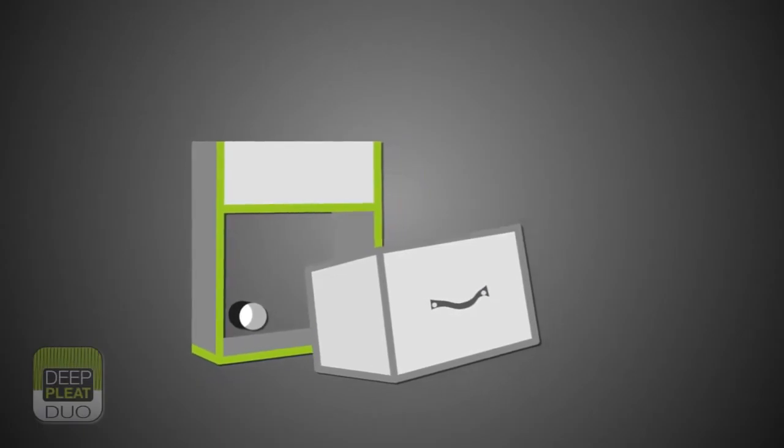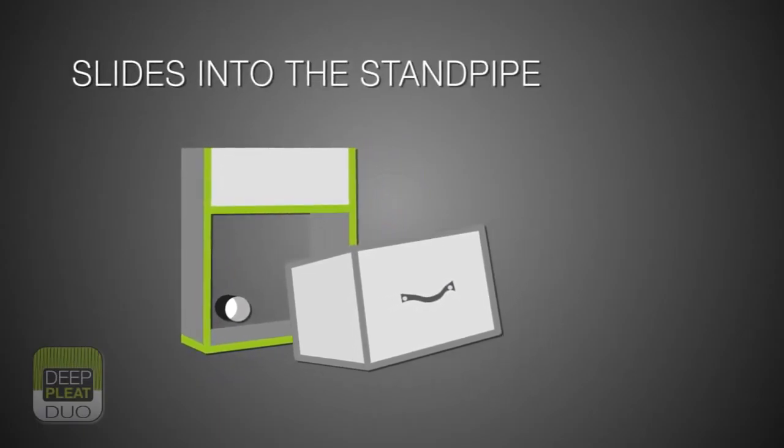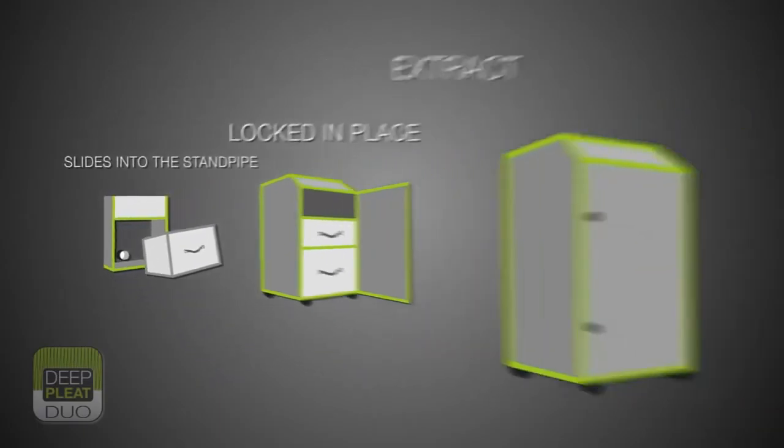The BOFA deep-pleat duo pre-filter slides into the standpipe and is locked onto it when the extractor door is closed, ensuring maximum protection during operation.